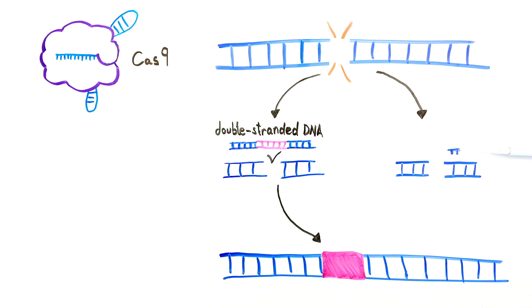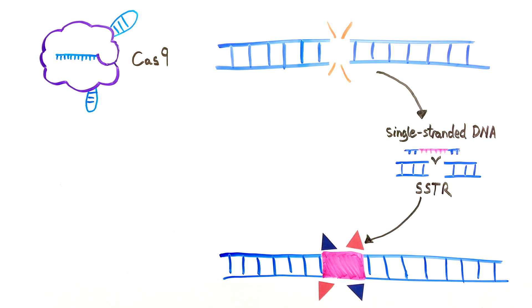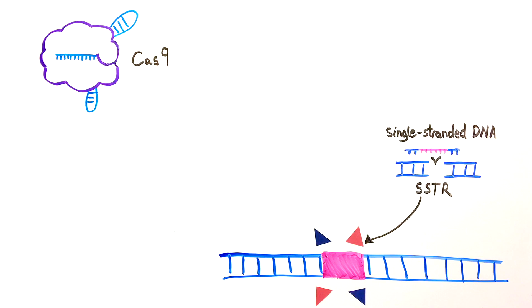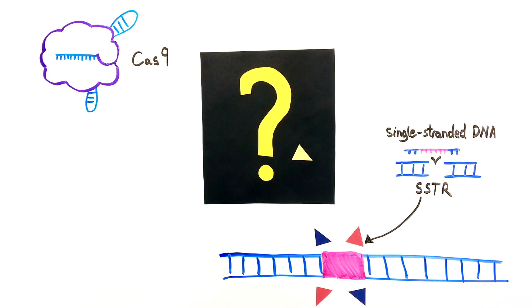A different pathway, called single-strand template repair, or SSTR, allows the cell to insert single-stranded DNA with shorter matching ends. Experiments show that cells can insert single-stranded DNA at cut sites more efficiently than double-stranded DNA. But how?